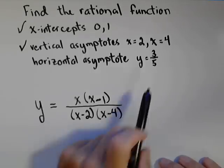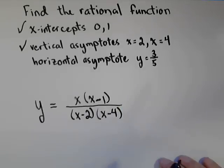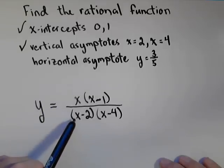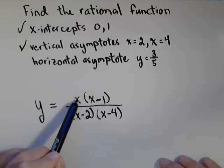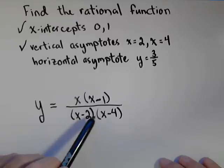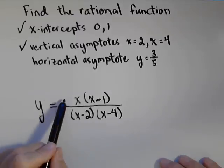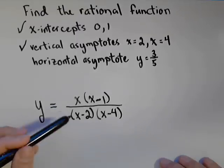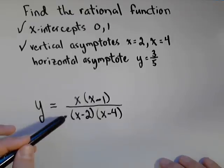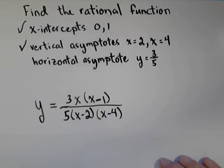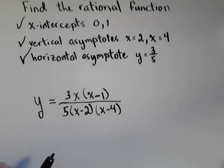Last thing we have to do is the horizontal asymptote at three-fifths. Remember how we look at this: if the power is greater on top, then it goes to infinity. If the power is greater on bottom, it goes to zero. Now, if we look, we have a quadratic on top because x times x is x squared, a quadratic on bottom, x times x is x squared. That means it goes to the ratio of their coefficients, which right now is one over one. So currently this thing has a horizontal asymptote at one. So all I have to do to make it three-fifths is basically multiply it by three-fifths, and now we have a horizontal asymptote at three-fifths, and we have our rational function. Thank you.